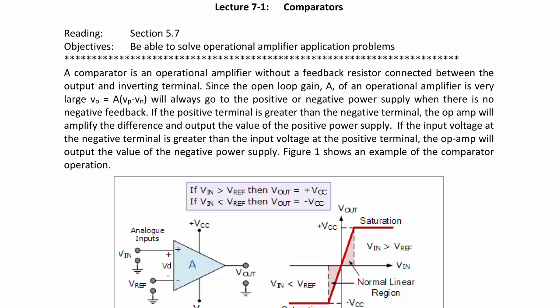If the positive terminal is greater than the negative terminal, the op amp will amplify the difference and the output will go to the positive power supply. If the input voltage at the negative terminal is greater than the input voltage at the positive terminal, the op amp will output the value of the negative power supply.